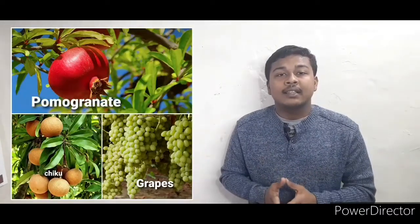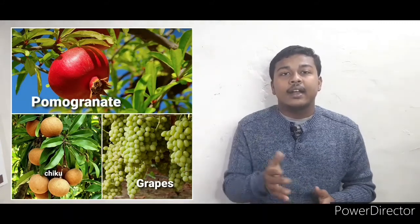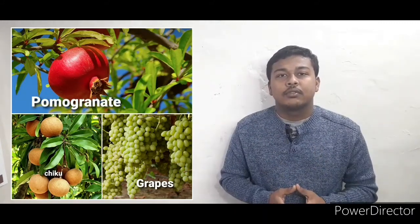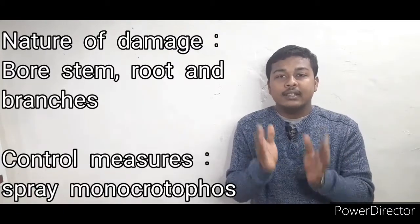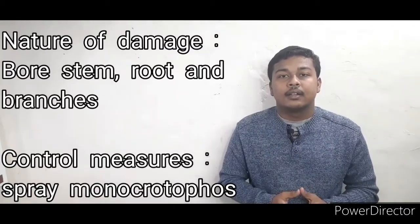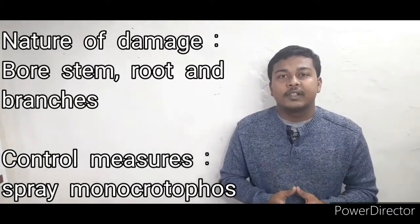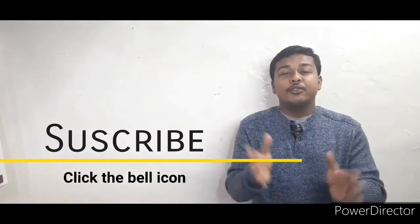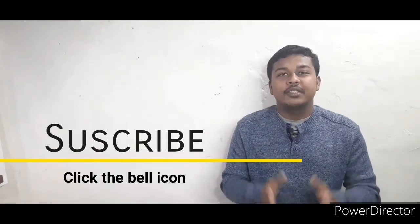The next pest is the shoot hole borer. The affected crop plants are pomegranate, grapes, and chiku. They bore into the stem, roots, and branches. To control this, spray dimethoate or monocrotophos.